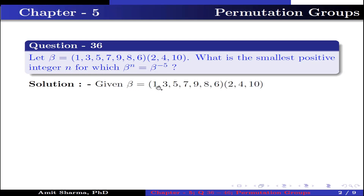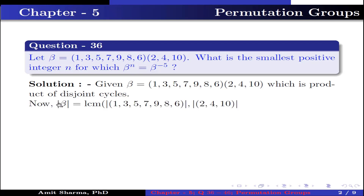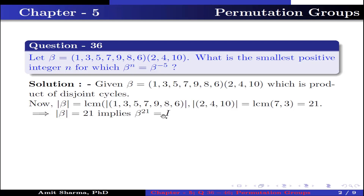Given beta is the product of permutations (1, 3, 5, 7, 9, 8, 6) and (2, 4, 10), which is the product of disjoint cycles. The order of beta equals LCM of the order of the permutation (1, 3, 5, 7, 9, 8, 6) and the order of permutation (2, 4, 10), which equals LCM of 7 and 3 — because it is a 7-cycle and a 3-cycle — and LCM of 7 and 3 is 21. This implies order of beta is 21, which further implies beta to the power 21 equals identity. Now multiplying beta to the power minus 5 on both sides, we get beta to the power 16 equals beta to the power minus 5. Therefore the value of n is 16.